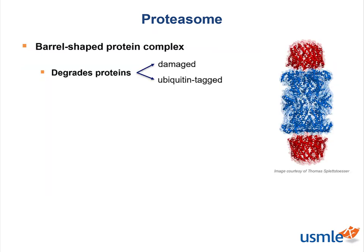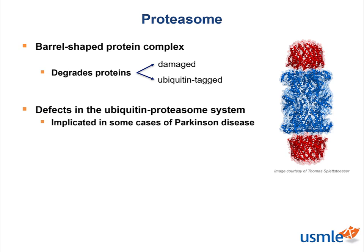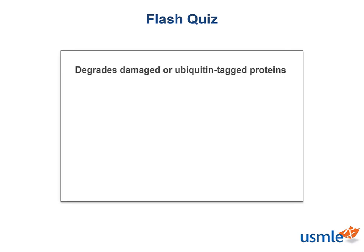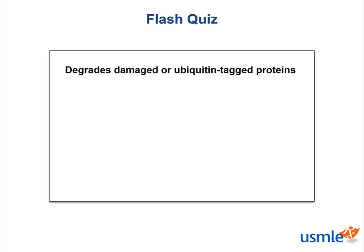Can you think of what would happen if there were defects in the ubiquitin proteasome system? Can you think of any conditions where there's an accumulation of proteins? Defects in the ubiquitin proteasome system have been implicated in some cases of Parkinson's disease. What is the role of the proteasome again? The proteasome degrades damaged or ubiquitin-tagged proteins.